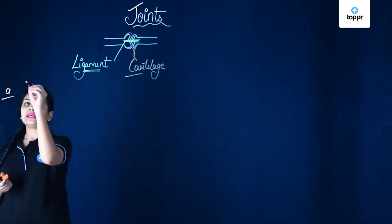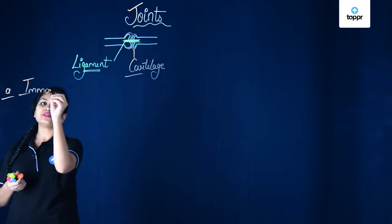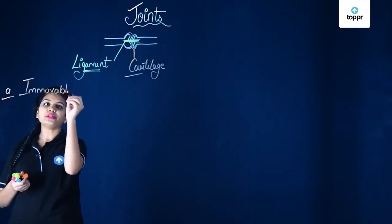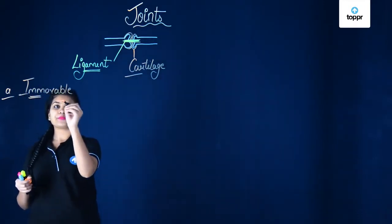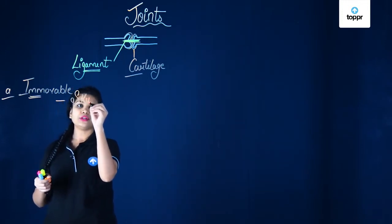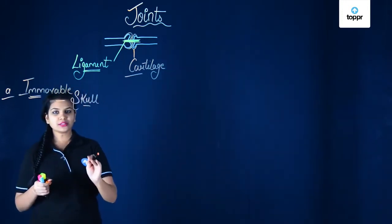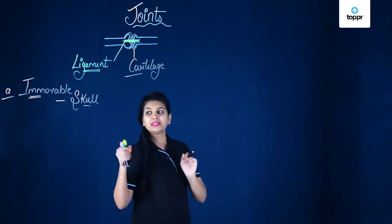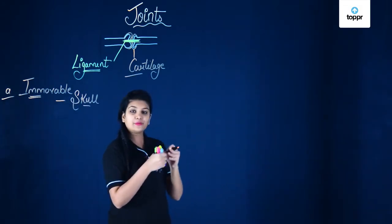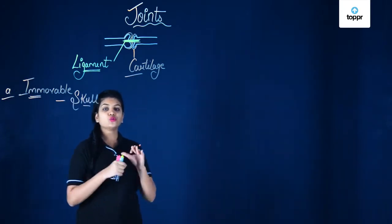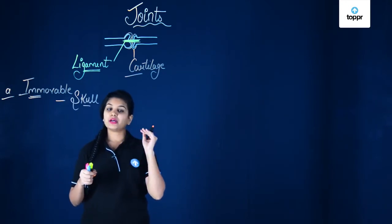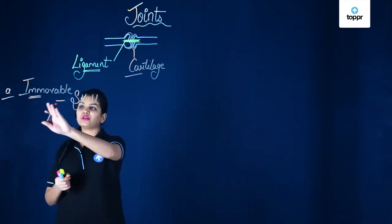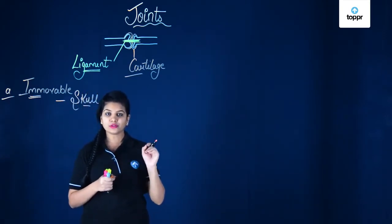The first type of joint is the immovable joint. As its name suggests, this type of joint is formed at places where there is no movement — for example, in the skull. In the cranium the bones are highly fused to each other and there is no movement. In the skull, except for the lower jaw which is movable, no other bone can be moved. So we call such a type of joint an immovable joint.